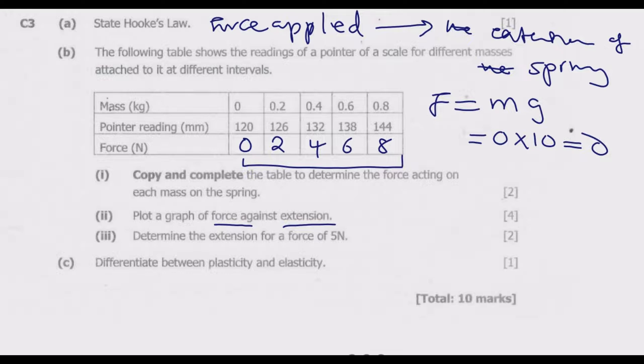To find the extension, from 120 to 126 the extension is basically 126 minus 120, which is 6 millimeter. Then similarly 132 minus 120 gives us 12. Then 138 minus 120 is 18. Then 144 minus 120 is going to be 24. These are the extensions starting from 120 which is basically like zero. So the extension is the difference within the reading before putting any mass.